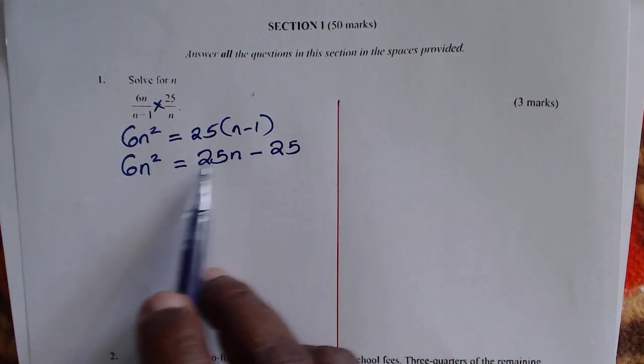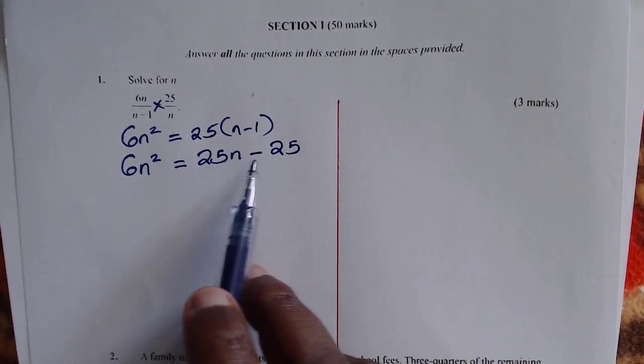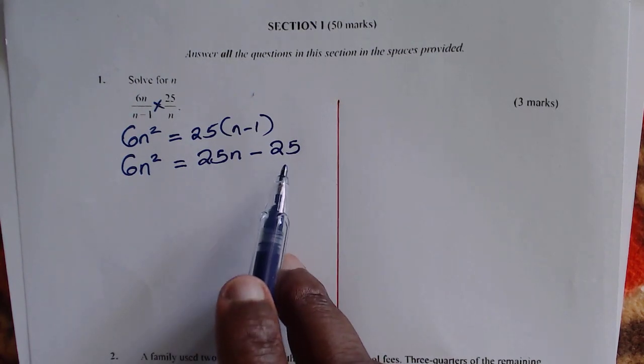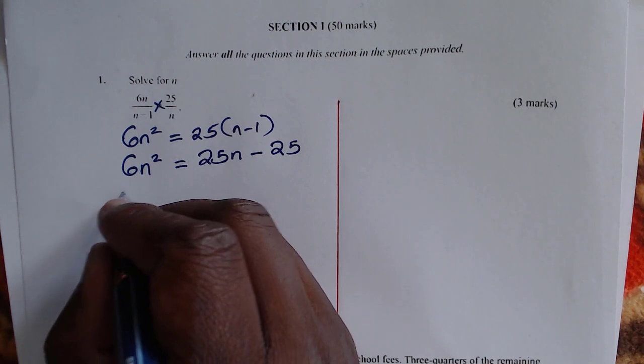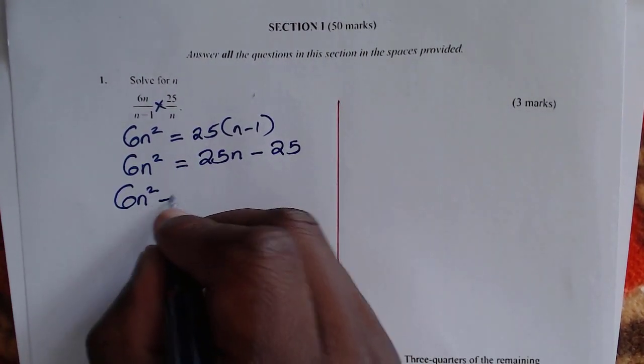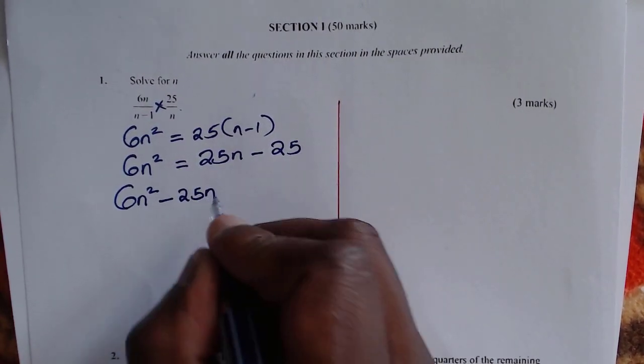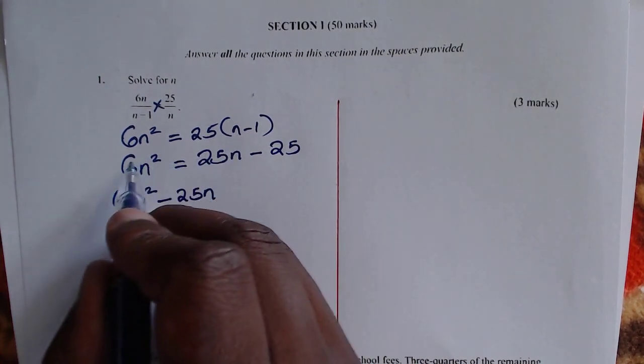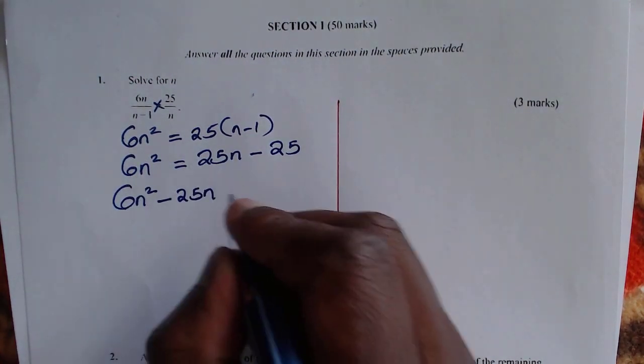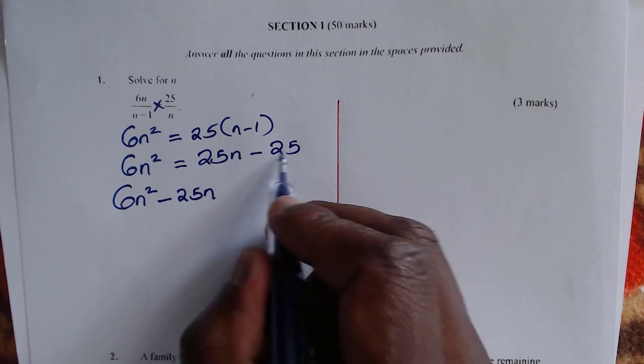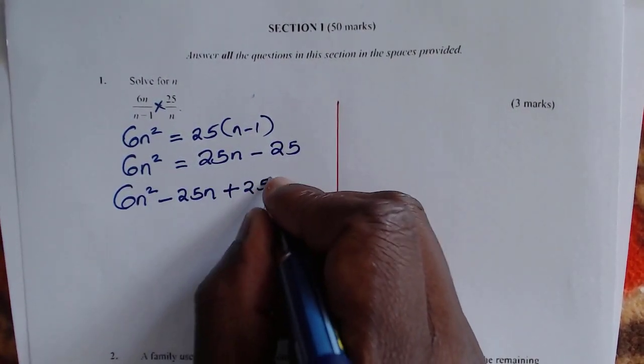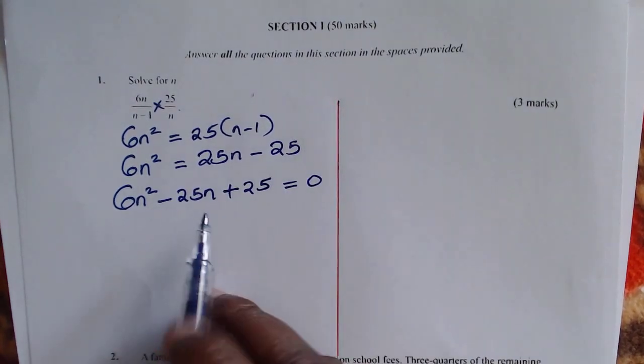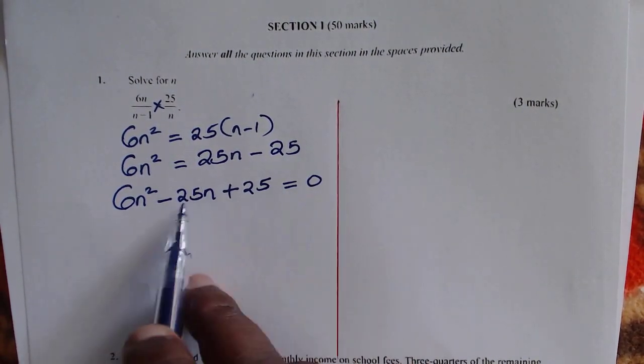When you look at this equation, you notice that this one will give a quadratic equation, so we organize this. We get 6n squared minus 25n. When you take 25n to the left hand side, you get that. When you take negative 25 to the left hand side, we get plus 25 is equals to 0. Now you notice this forms a quadratic equation.